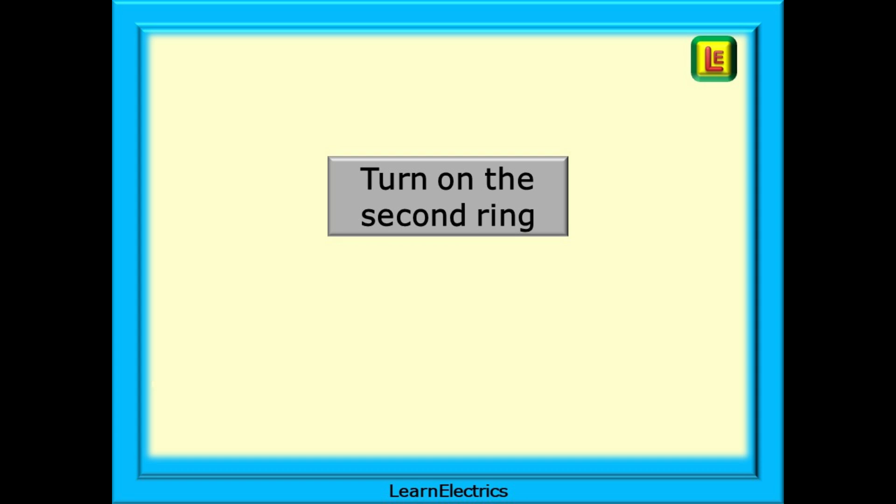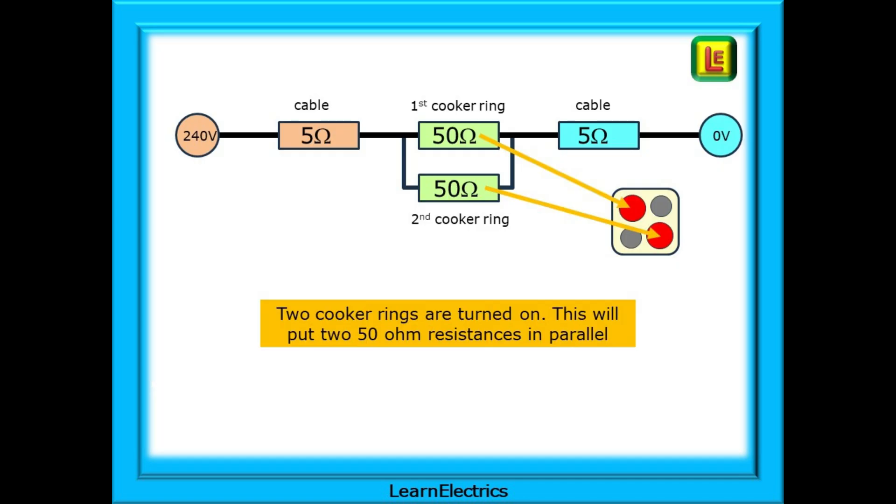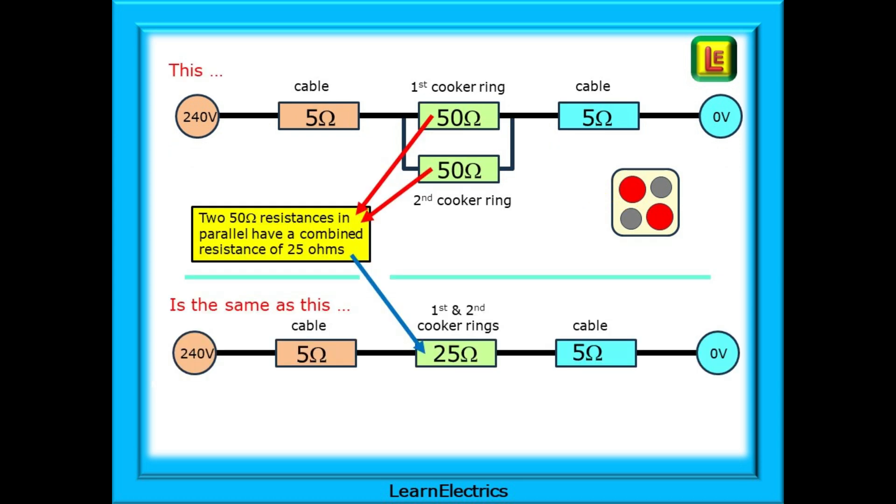What happens if we turn on the second ring? Will things improve or get worse? With two cooker rings turned on, this will effectively put two 50 ohm resistances in parallel. The top circuit is the same electrically as the bottom circuit. Ohm's law tells us that two 50 ohm resistances in parallel have a combined resistance of 25 ohms. The cables have stayed the same at 5 ohms and now make up more than 28% of the circuit resistance. This is going to have a profound effect on the power in the circuit.